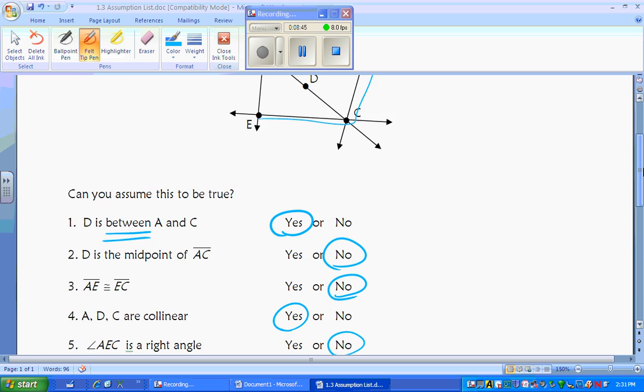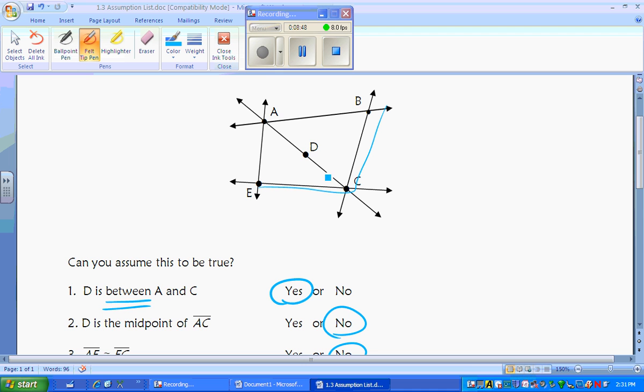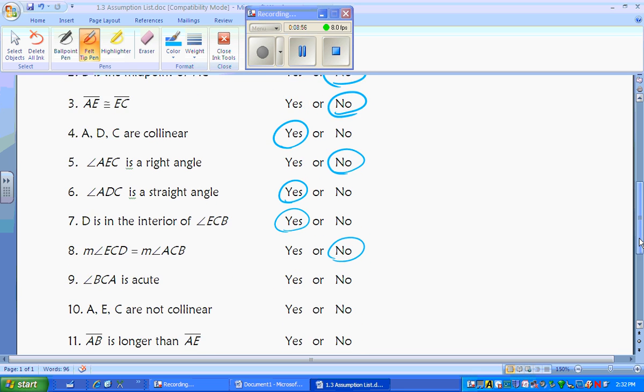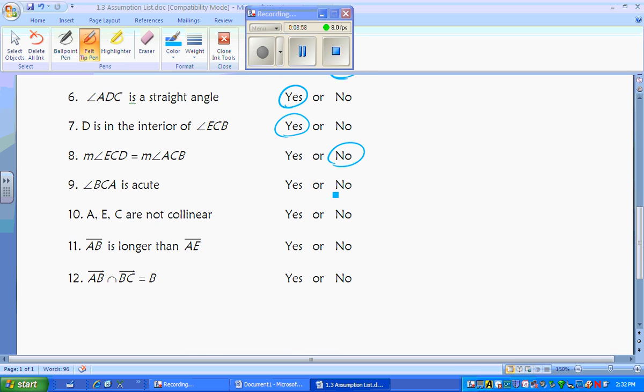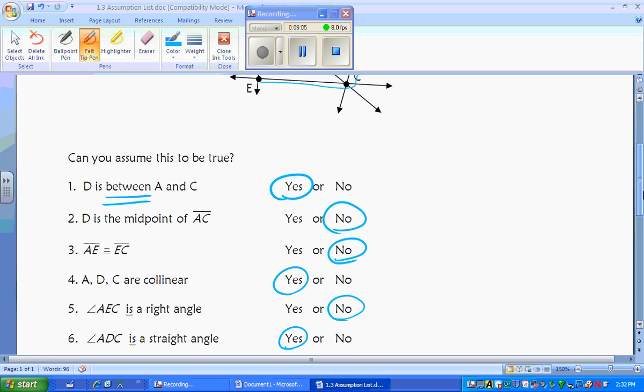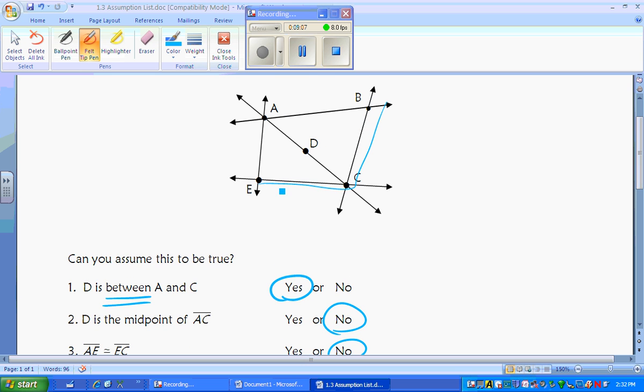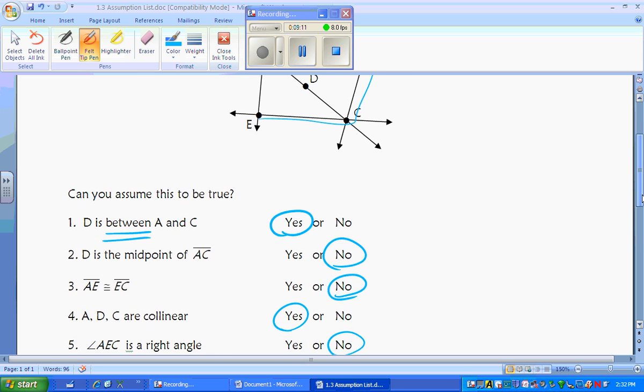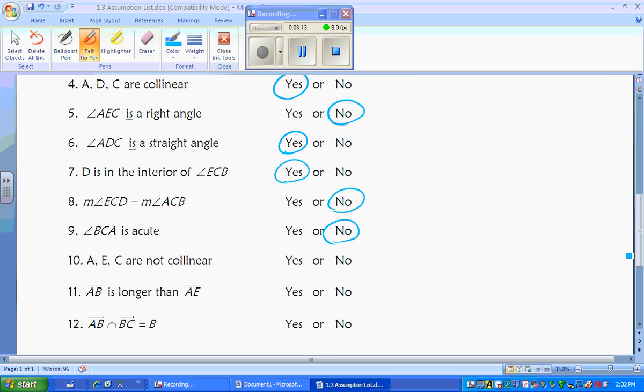BCD is acute. We're assuming that it's acute, but once again, that's kind of like that idea of the 90 degree angle. If it's not marked, you can't assume it. Maybe it's just a really bad drawing. So no, we can't assume that it's acute. AEC is not collinear. If you can assume collinear, you can assume non-collinear, because they obviously didn't connect to be a straight line.